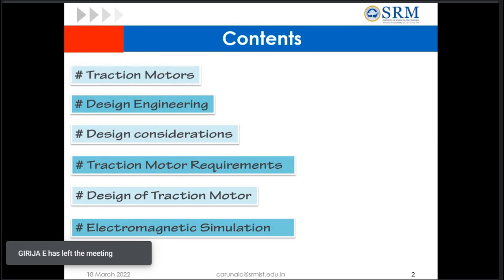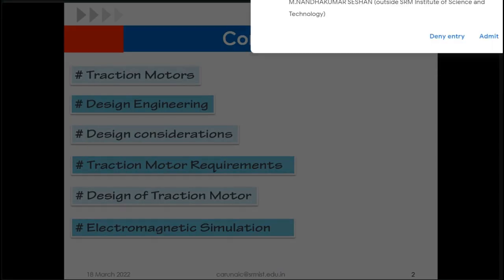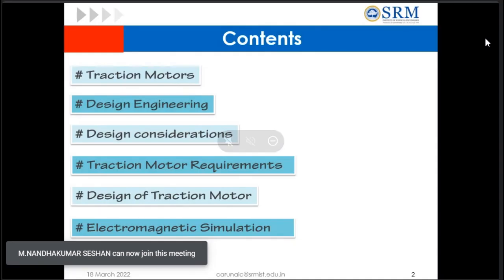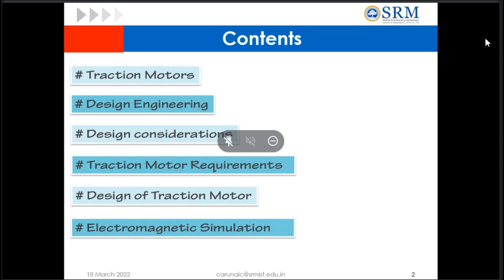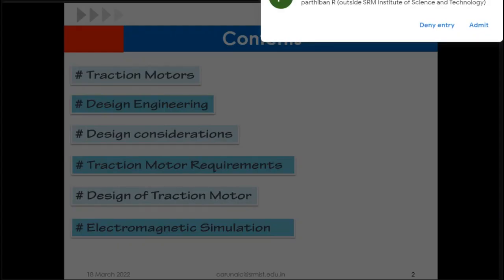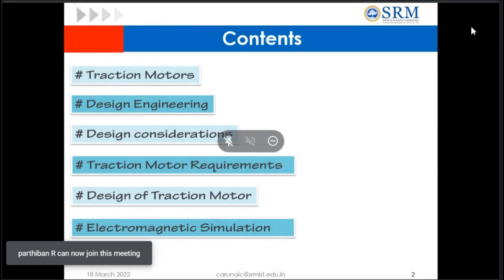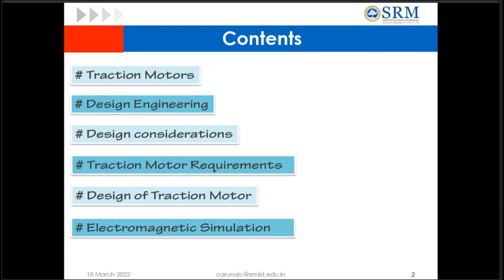Next, what are the things we have to consider, like literature? We have to keep these things in mind and fixing these things only we have to finally go into design things. So this is what we are going to see, and finally coming into our topic: what are the basic requirements for deciding that these motors are suitable for traction application, the design of traction motor, and then we will get into our electromagnetic simulation hands-on training. So this is going to be our content.